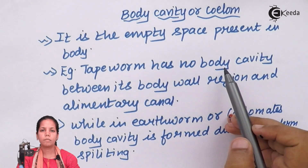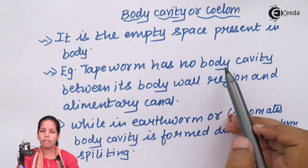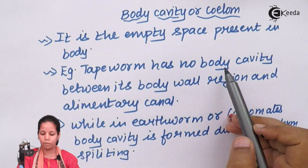Coelomate organisms are those that have a greater surface area. For example, tiger, lion, or an ostrich kind of bird.